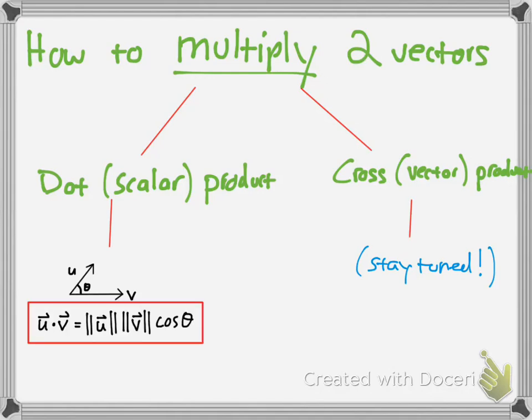And this is the formula we're going to be using, pretty much the magnitude of u vector times the magnitude of v vector times cosine of theta. So let's see what that actually means with a few examples.